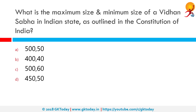What is the maximum size and minimum size of a Vidhan Sabha in an Indian state, as outlined by the Constitution of India? In any state assembly, the maximum strength is fixed at 500 and the minimum at 60, meaning its strength varies between 60 to 500 depending on the population of the state. However, in the case of Arunachal Pradesh, Sikkim, and Goa, which have very small populations, the minimum number is fixed at 30. In the case of Mizoram and Nagaland, it is 40 and 46 respectively.